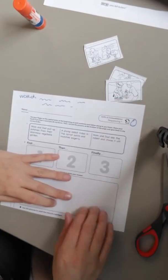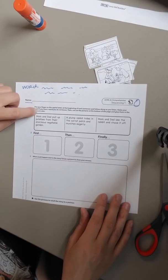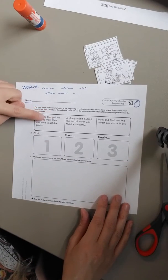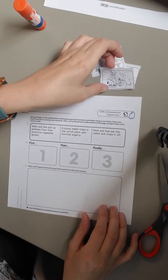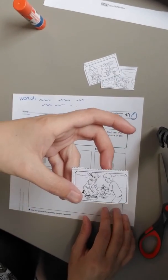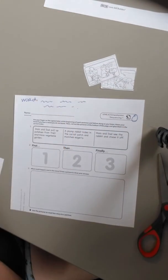So let's go back to the story and see what we should put first. So the first thing, mom and dad pull up potatoes from their enormous vegetable garden. So I think that this one will fit best because they're pulling up vegetables. So I'm going to glue that one in my first box.